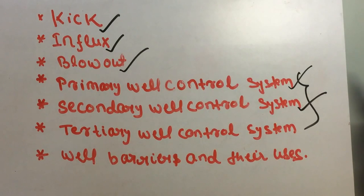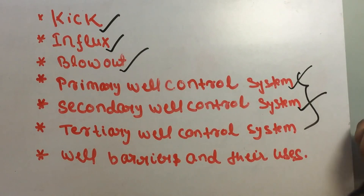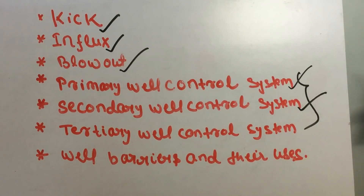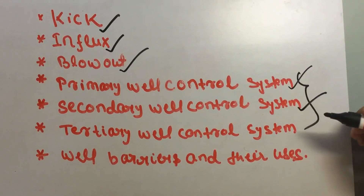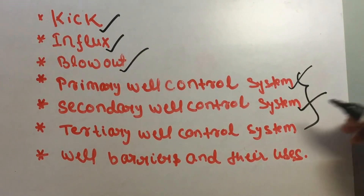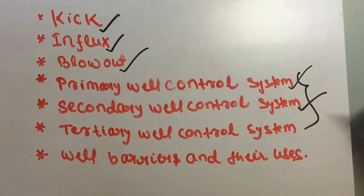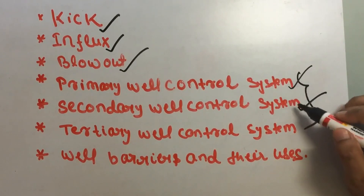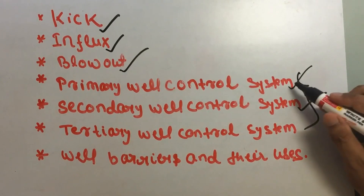After failure of the primary well control system, we use the secondary well control system to re-establish the primary well control system. Secondary well control involves safe handling of the kick so as to re-establish primary well control. The influx that entered the wellbore is removed with the help of the BOP and heavier drill mud fluid.